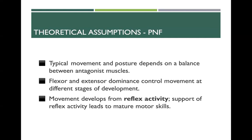Theoretical assumptions of PNF: typical movement and posture depends on a balance between antagonistic muscles. The antagonist muscle is the muscle that is relaxed — it's not the prime mover like the agonist. For example, if the tricep is the antagonist during flexion and is too tight, it cannot allow the bicep to move into flexion as the prime mover and agonist, and vice versa. Flexor and extensor dominance control movement at different stages of development, and normal goal-directed behavior is made up of reversing behaviors.